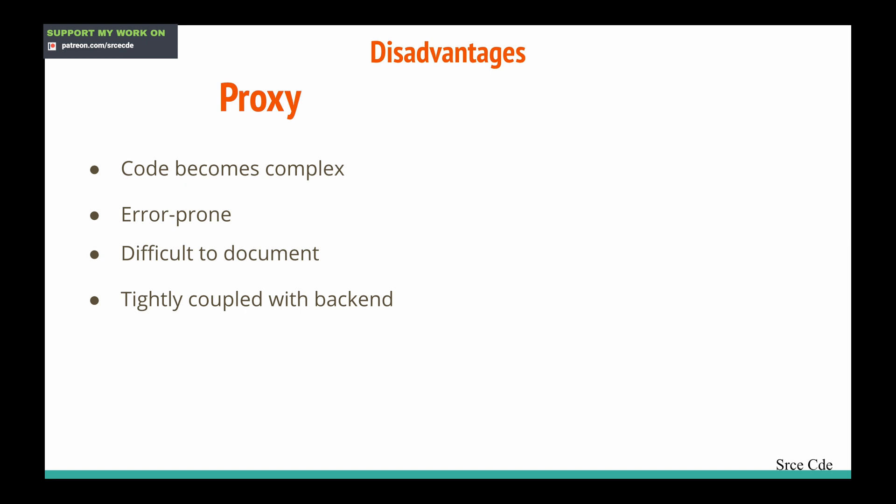Now let's look at the disadvantages. Within proxy integration, code starts to become complex because everything sits in the code — parsing the request, executing business logic, setting the error code, response message — everything is in the code. Hence it starts to become complex and error-prone, because when the code gets complex a human can make a mistake. A thorough review will help here. It is basically difficult to document since everything is in the backend and it is tightly coupled with the backend.